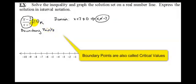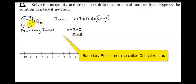Once it's in this format, we find the boundary points by setting this fraction equal to 0. A fraction is equal to 0 when the numerator is equal to 0. So we set the numerator equal to 0, add 2 to both sides, and we get x equals 2 as a boundary point. Then we find another boundary point by setting the denominator equal to 0: x plus 7 equals 0, subtract 7 from both sides, x equals negative 7.